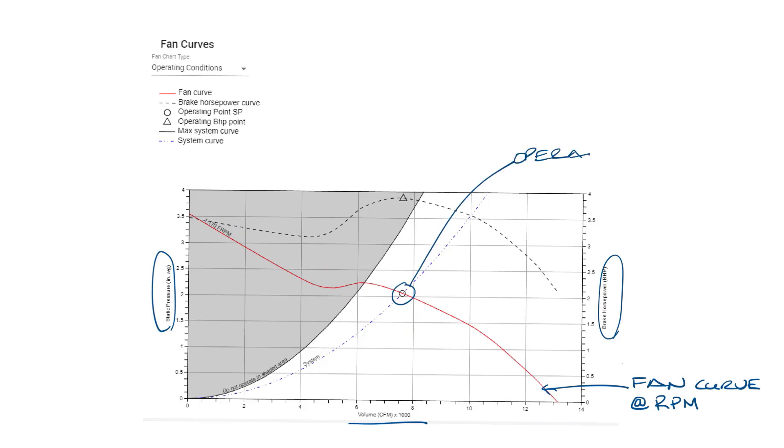This point is our operating point, 7500 CFM at 2 inches. You can see if the pressure was lower, the airflow along the curve would be higher.